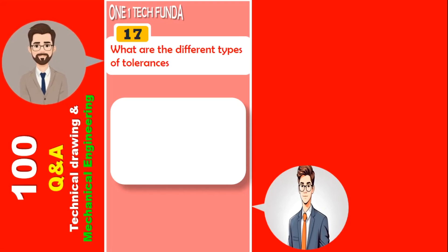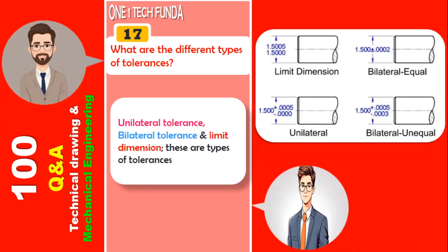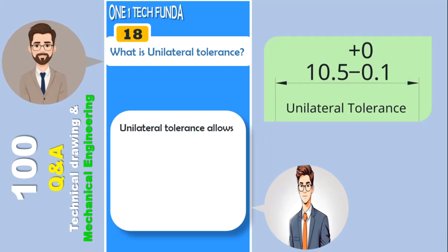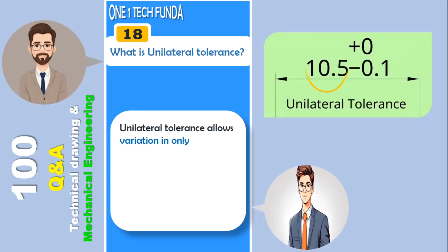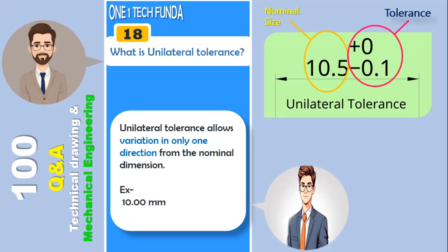What are the different types of tolerances? Unilateral tolerance, bilateral tolerance, and limit dimension are the types of tolerances. Unilateral tolerance allows variation in only one direction from the nominal dimension. Example: 10 mm +50 micron, 12 mm −2 micron.